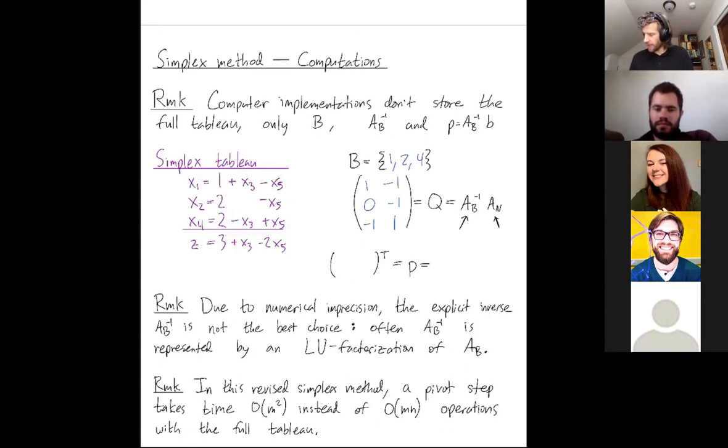AN is, well, AB inverse is an M by M matrix, and AN is an M by N minus M matrix. Because we have N minus M non-basic variables, if we have M basic variables. So you can solve for Q using AB inverse.